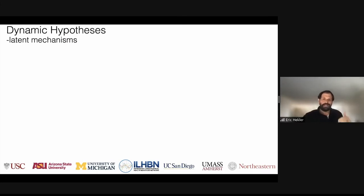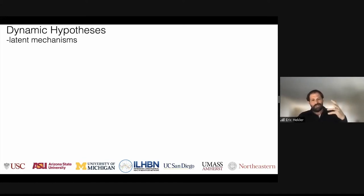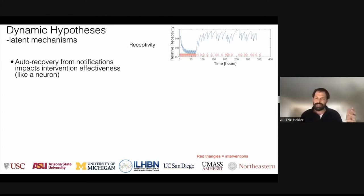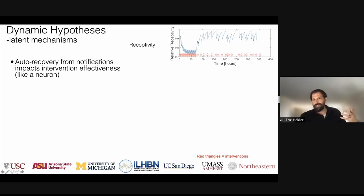We started thinking about three latent mechanisms — all simulation, just to get a clear sense of moving from prior knowledge and domain knowledge into process models. The first was auto-recovery: the idea that, much like a neuron, if you keep sending notifications people will start ignoring them — they're getting overwhelmed. But if you're more careful, there's an auto-recovery such that people become more receptive to support if you don't bother them too much. The red triangles represent whenever an intervention was sent, shown in hours.